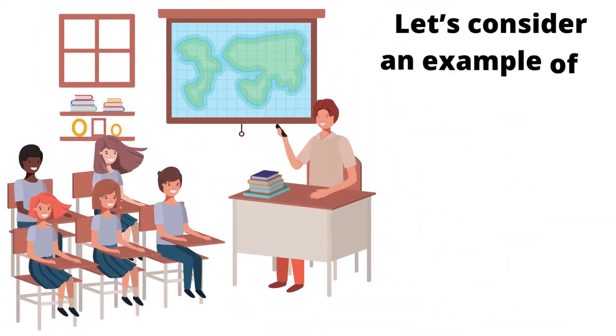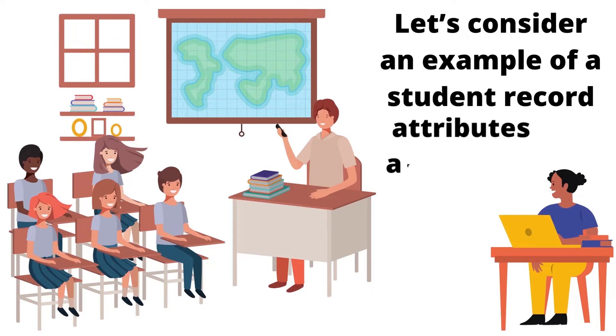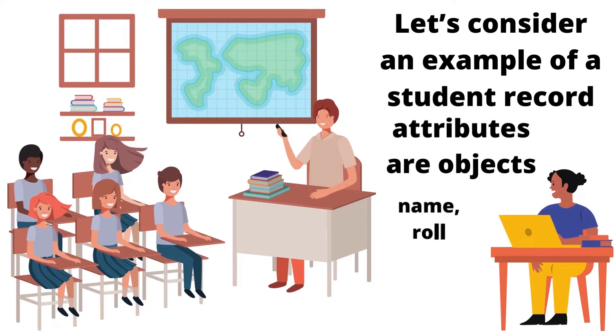Let's consider an example of a student record. A student is considered a class, whereas attributes are objects. These can include name, role number, age, class, and so on.